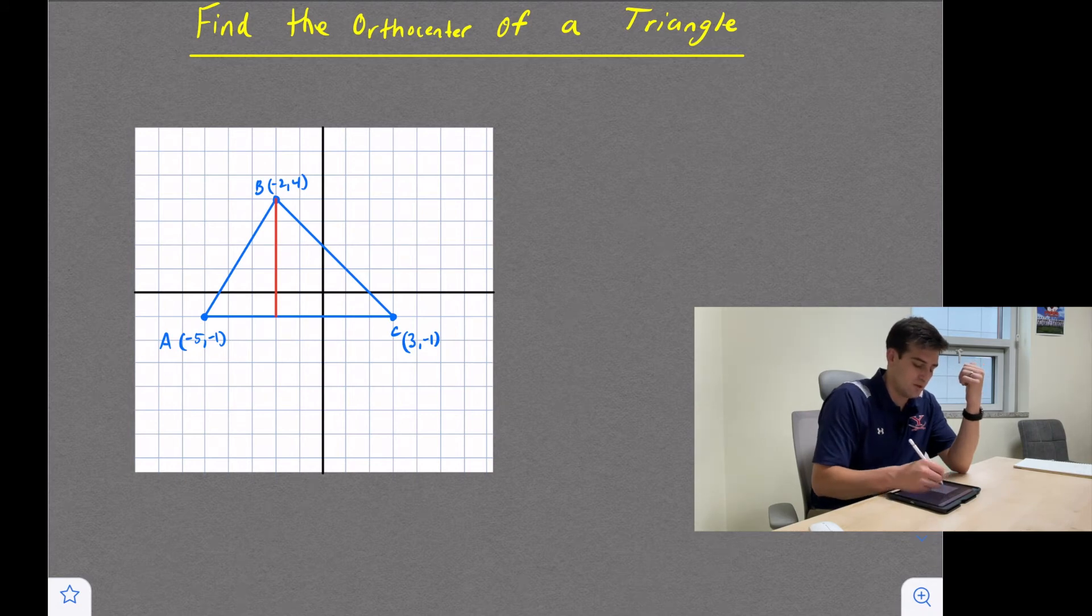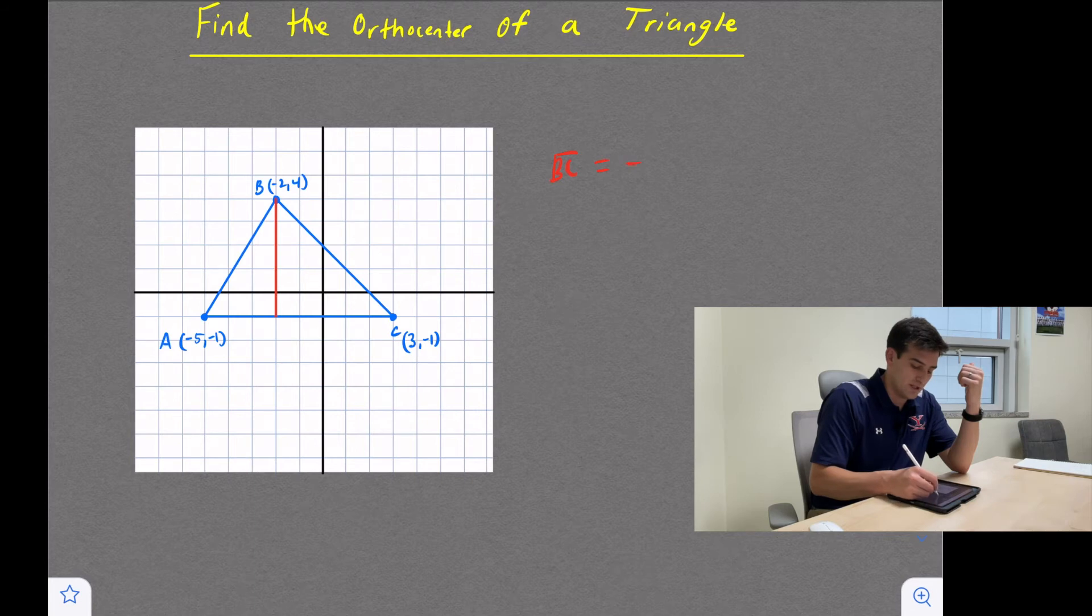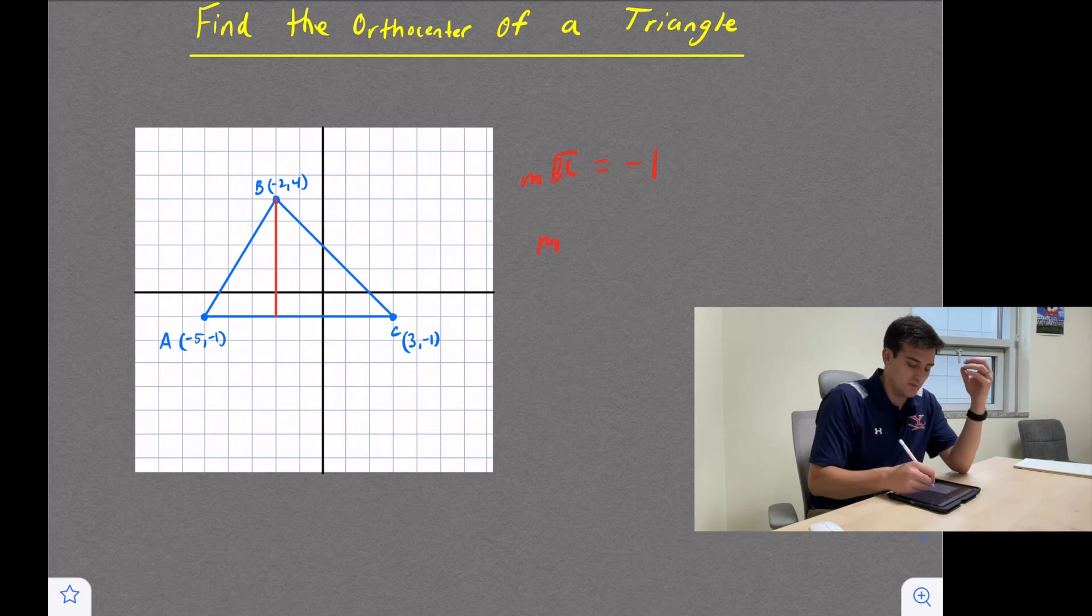So we're just going down one and right one, so the slope of BC is equal to negative one. The slope, I'm going to say M. The slope of BC. So that means the slope of my altitude needs to be positive one.